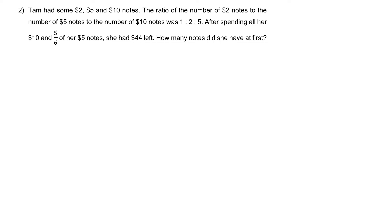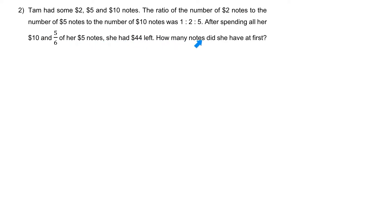Question 2. Tam had some $2, $5, and $10 notes. The ratio of the number of $2 notes to the number of $5 notes to the number of $10 notes was 1:2:5. After spending all her $10 notes and 5/6 of her $5 notes, she had $44 left. How many notes did she have at first?